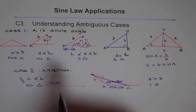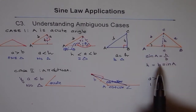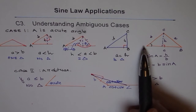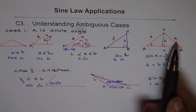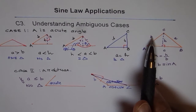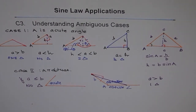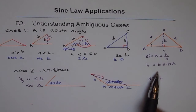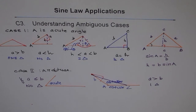Against an obtuse angle, the side must be the longest side in the triangle, otherwise it cannot be formed. To summarize all ambiguous cases: if A is acute, find H = B·sin(A) and compare side a to H and B. If a equals H, right triangle. If H < a < B, two triangles. If a > B, one triangle. If a < H, no triangle. If A is obtuse, a triangle is possible only if a > B; otherwise no triangle is formed.